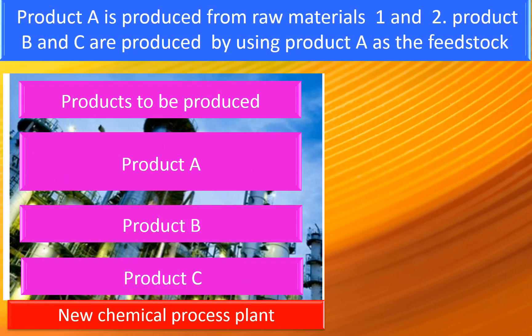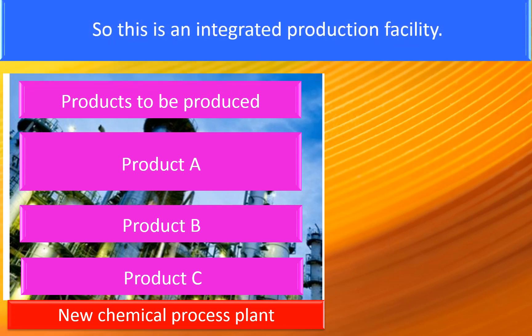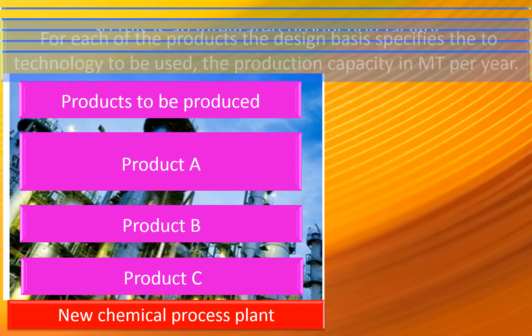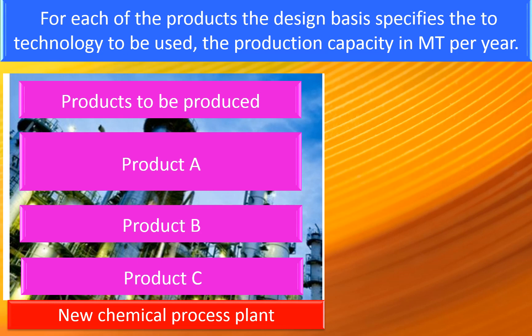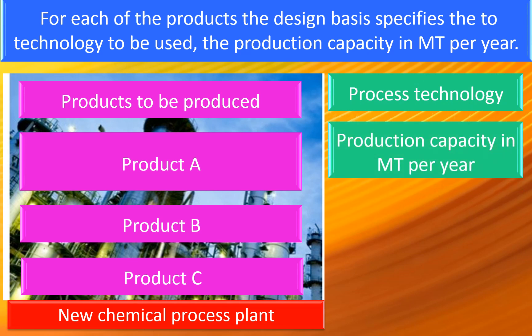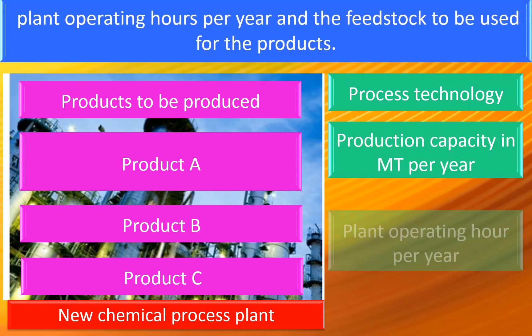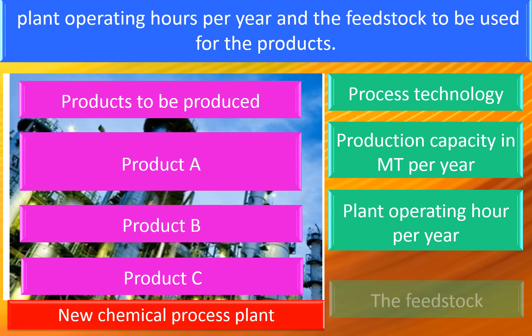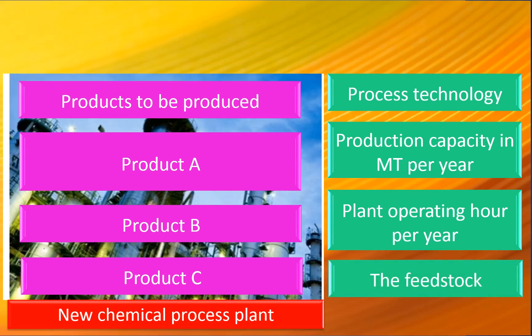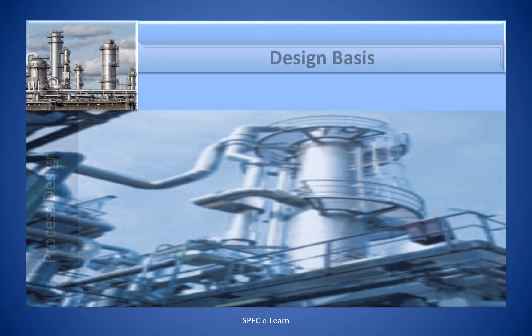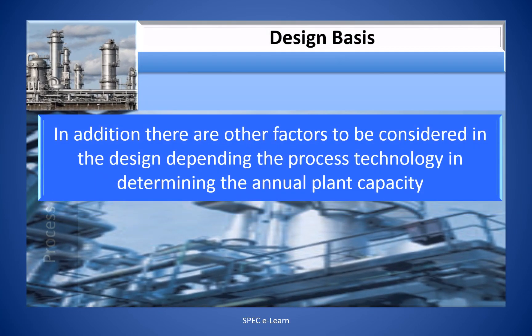Product A is produced from raw materials 1 and 2. Product B and C are produced by using Product A as a feedstock, making this an integrated production facility. For each product, the design basis specifies the technology to be used, the production capacity in metric tons per year, the plant operating hours per year, and the feedstock to be used. There are also other factors to be considered depending on the process technology in determining the annual plant capacity.